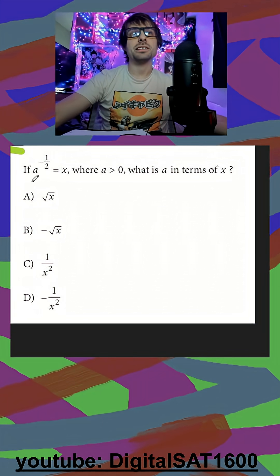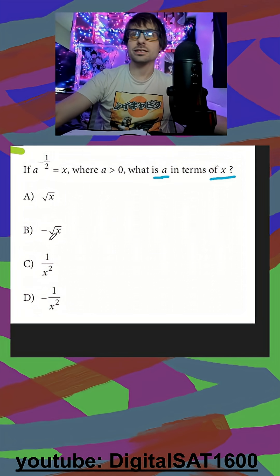Some exponent rules here. I see a to the negative one-half is equal to x, and they want a in terms of x. That means they want us to get an a equals. You can also tell that because all of my answers are just an x, there's no a.